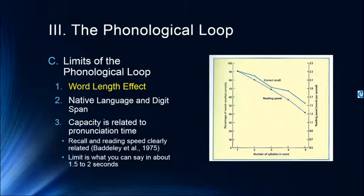The capacity is really related to pronunciation time. Work by Alan Baddeley and colleagues shows that correct recall is directly related to reading speed — how quickly somebody could read through the items. It falls somewhere between about one and a half to two seconds, with some individual differences. The limit of working memory in the phonological loop is limited to what you can say in about one and a half to two seconds — a really different way of thinking about the capacity of short-term memory.